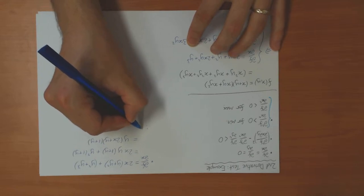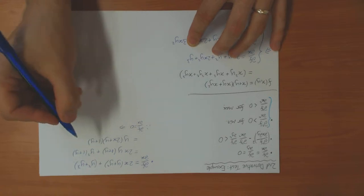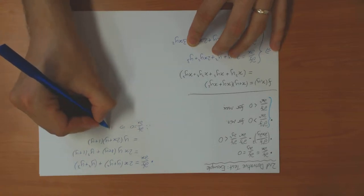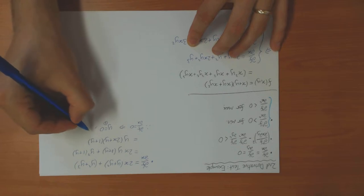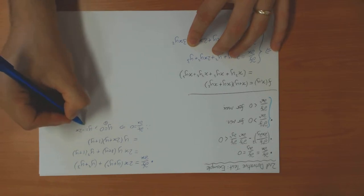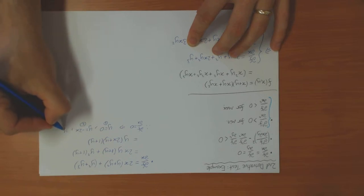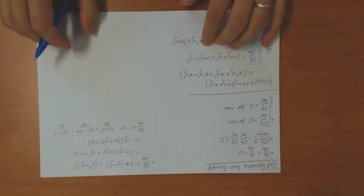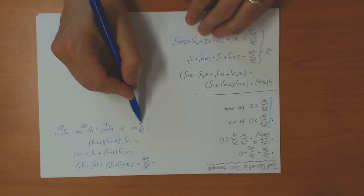So df/dx = 0 means one of three things equals zero: either y = 0 (condition 1), or y = −2x (condition 2), or y = −1 (condition 3). These are the conditions from the x-derivative being zero.